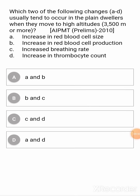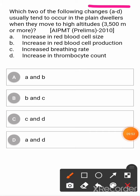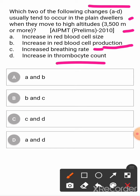Question: which two of the following changes usually tend to occur in plain dwellers when they move to high altitudes of 3500 meters or more? Option A: increase in red blood cell size. Option B: increase in red blood cell production. Option C: increase in breathing rate. Option D: increase in thrombocyte count. The correct answer is B and C — increase in red blood cell production and increase in breathing rate.